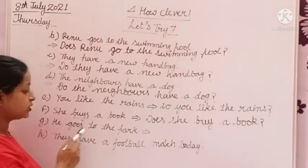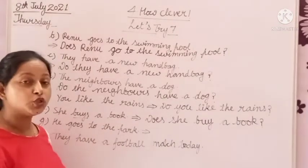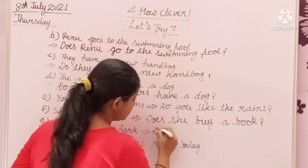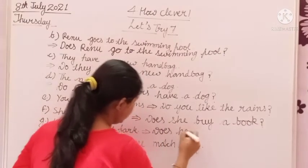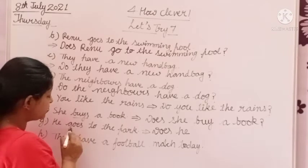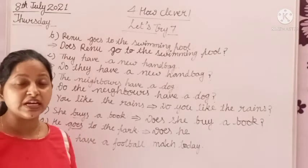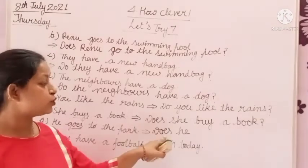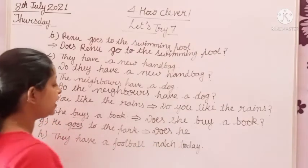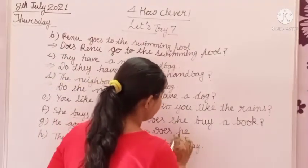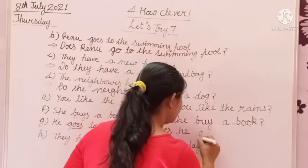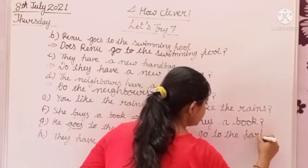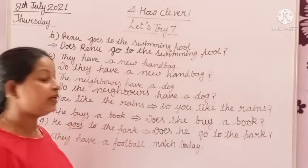He goes to the path. He is a singular pronoun, so we will use does. Does he — and goes is the verb. We do not use the -es form; we use only the first form of verb when we use do and does in the sentence. Does he go to the path?